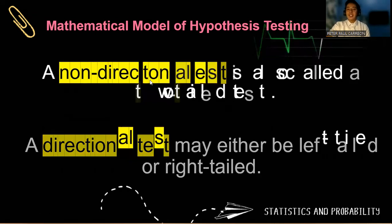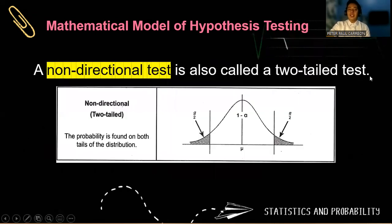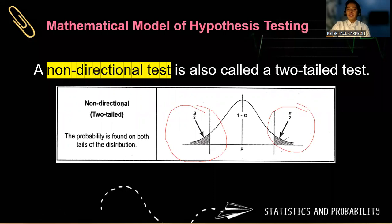So a non-directional test is also called a two-tailed test. Notice that in our mathematical model, our alpha is located on both the left and the right. So it is represented by alpha over two and alpha over two, which are our rejection regions. And this unshaded region, one minus alpha, is our non-rejection region. So observe that the probability is found on both tails of the distribution.